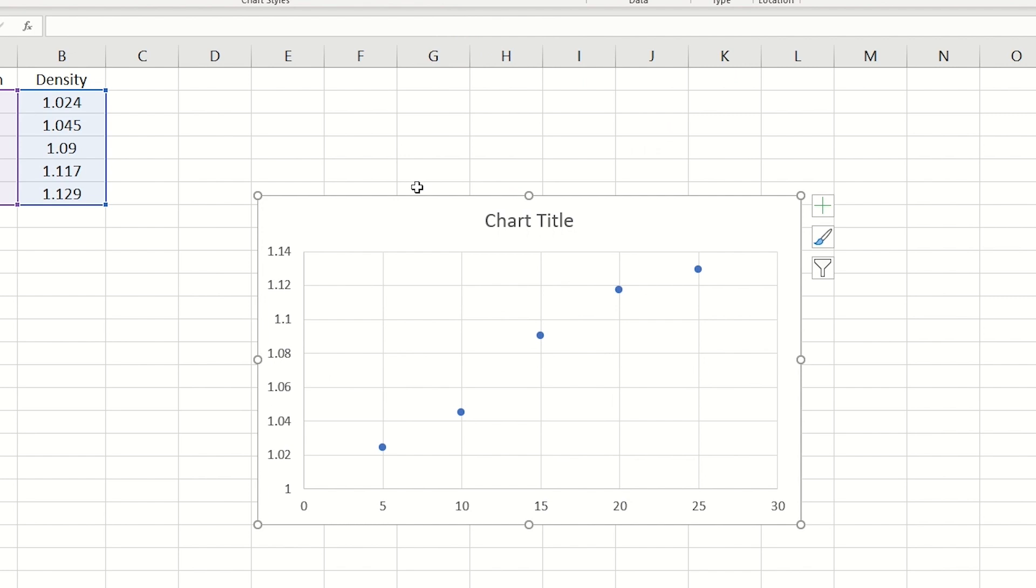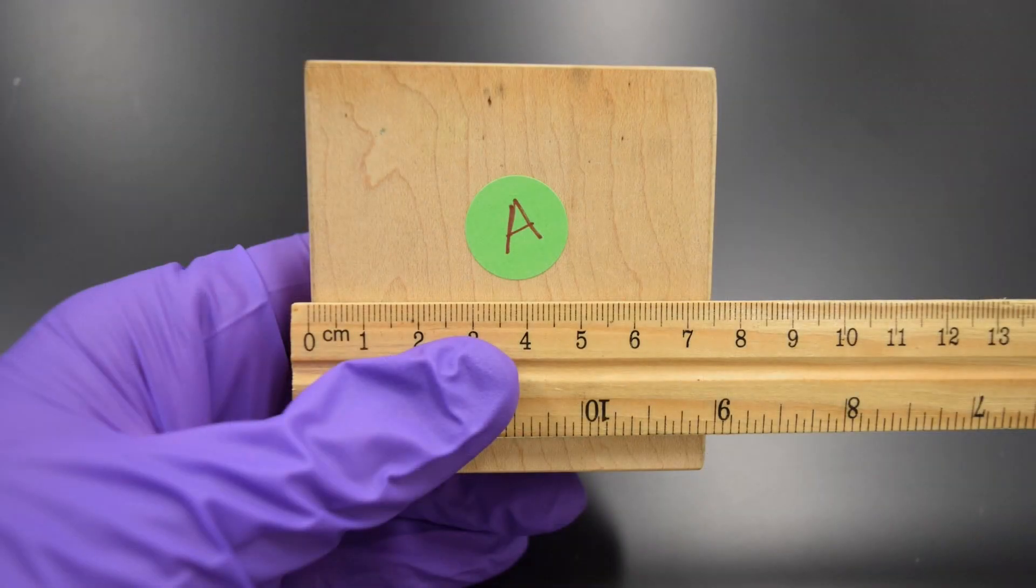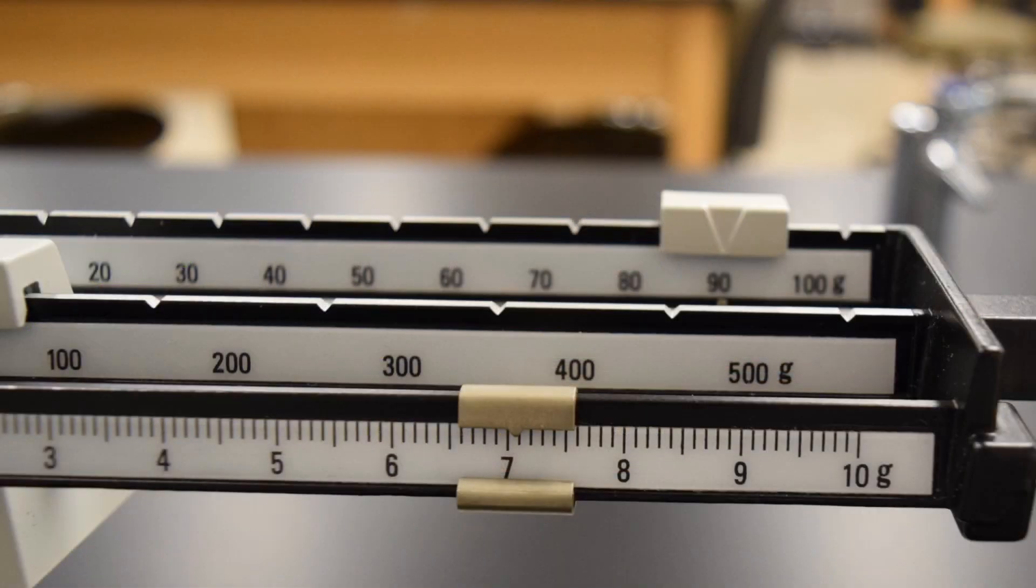Let's begin by finding the densities of solids. Our regularly shaped solid is a wooden block. I'll measure the mass on a triple beam balance. Be sure to refer to the video on mass determinations to review how to read the triple beam balance. I'll record the mass to two decimal places.